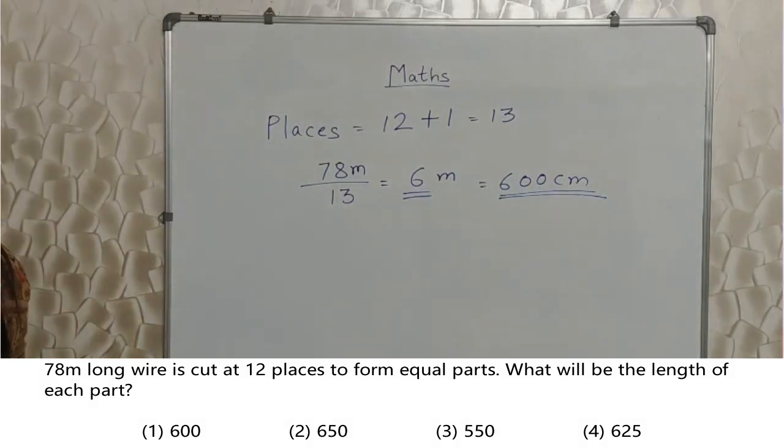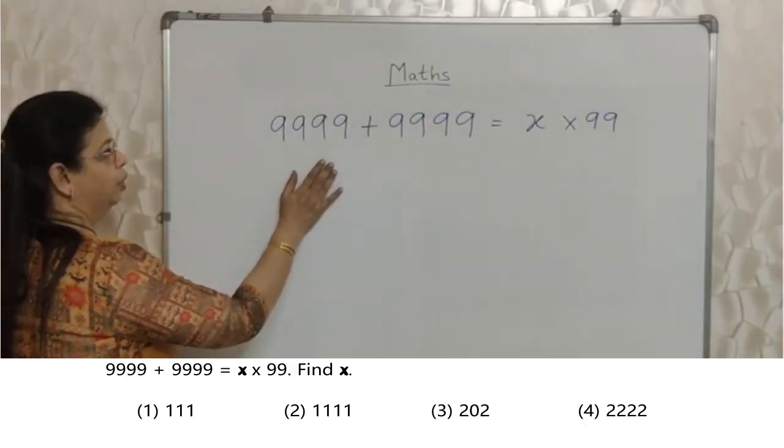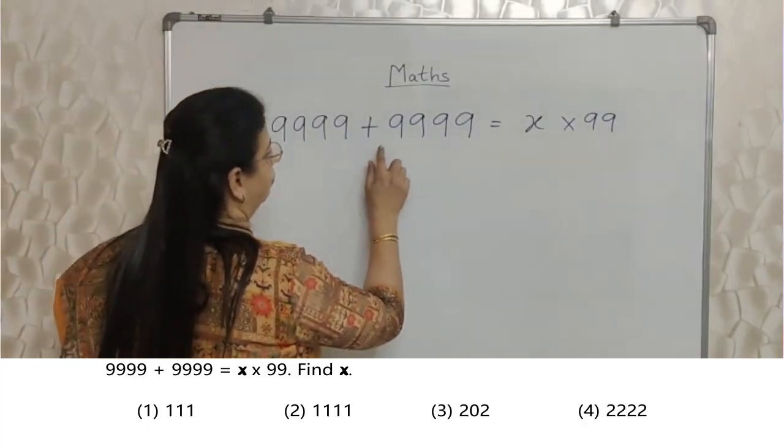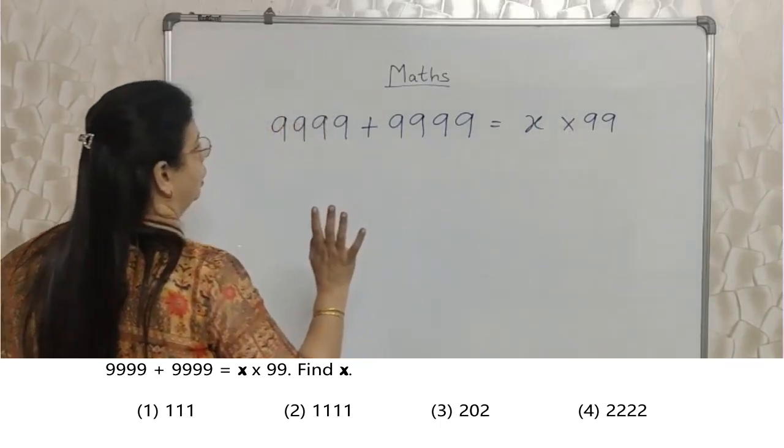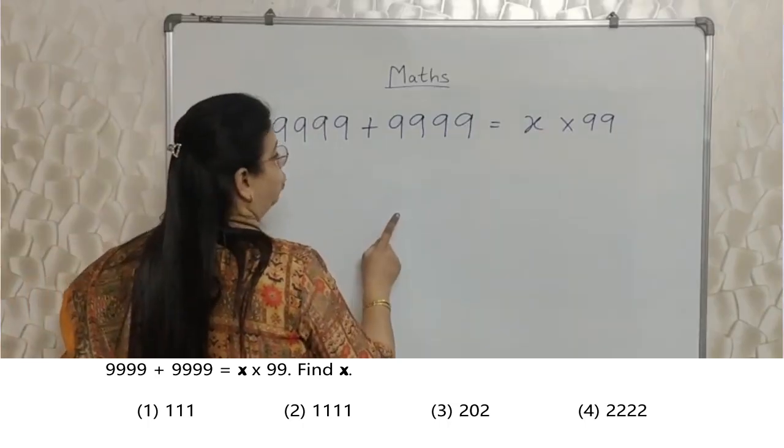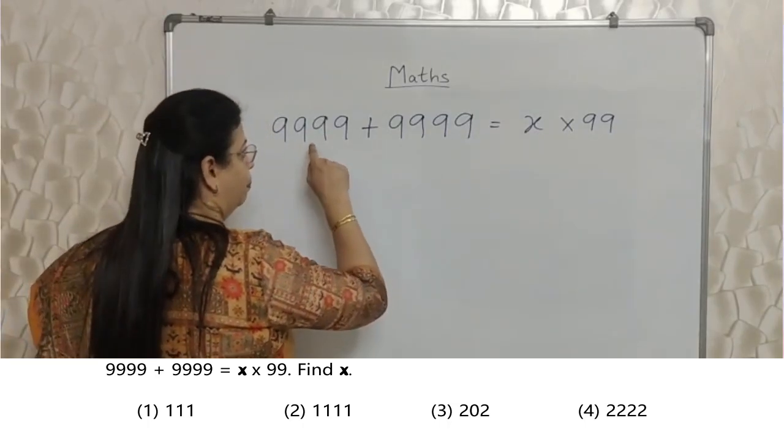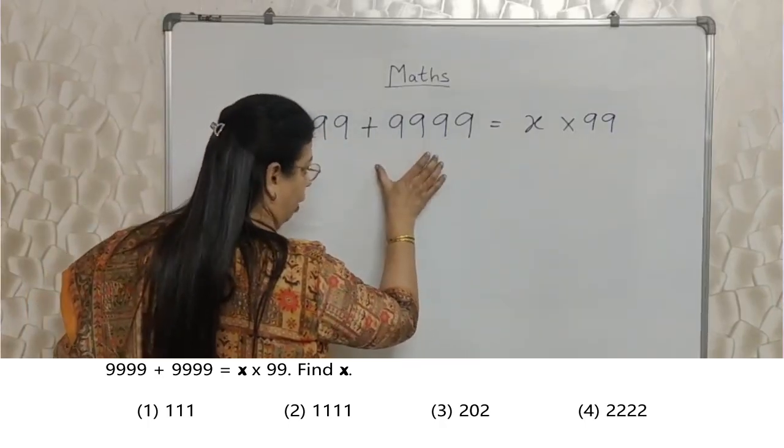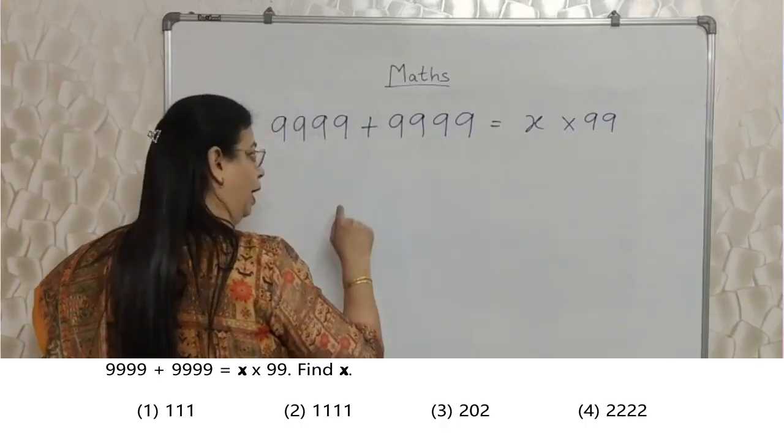Chalo, aage padhte hai bachalo. Students, I have written the sum on the board. 9999 plus 9999 is equal to x into 99. See students, here again we expect you to work smartly.